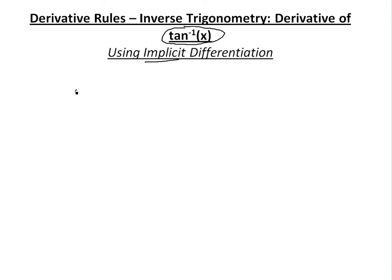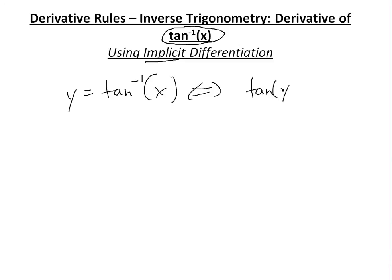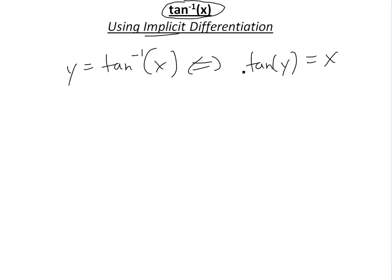So basically, if you have the function y is equal to inverse tan of x, as with my other inverse function videos, this is basically a way of writing tan y is equal to x. You switch the x's and y's and solve for y, where y is inside the inverse function.